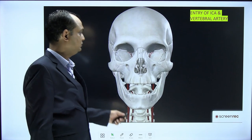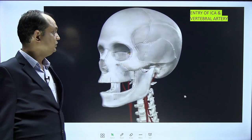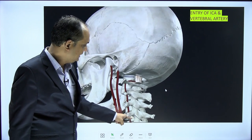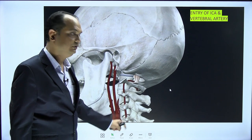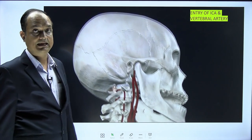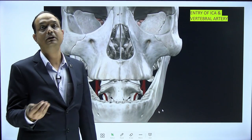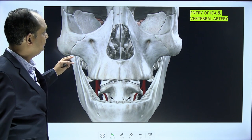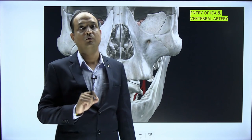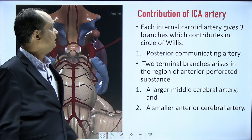In this video clip you should appreciate the entry of the internal carotid and vertebral arteries. The vertebral artery passes through the foramen transversarium of the cervical vertebrae and enters through the foramen magnum on both sides. The common carotid divides into external and internal carotid, with the internal carotid entering the cranial cavity through the carotid canal.